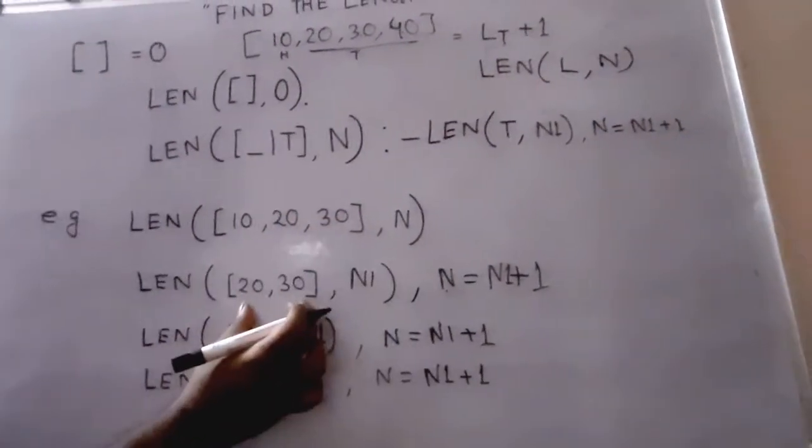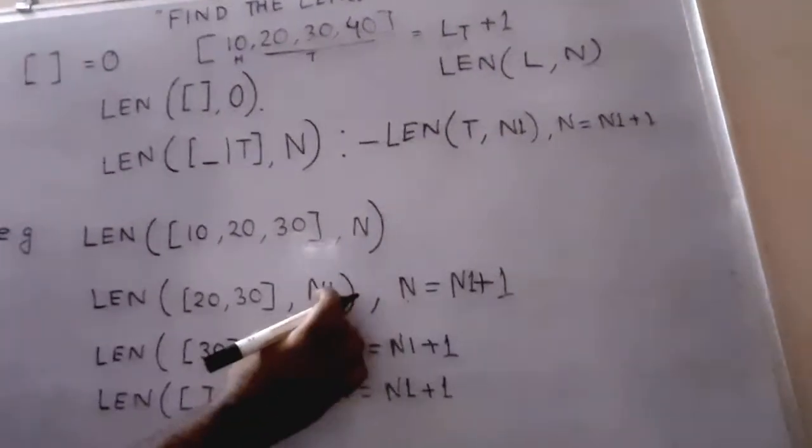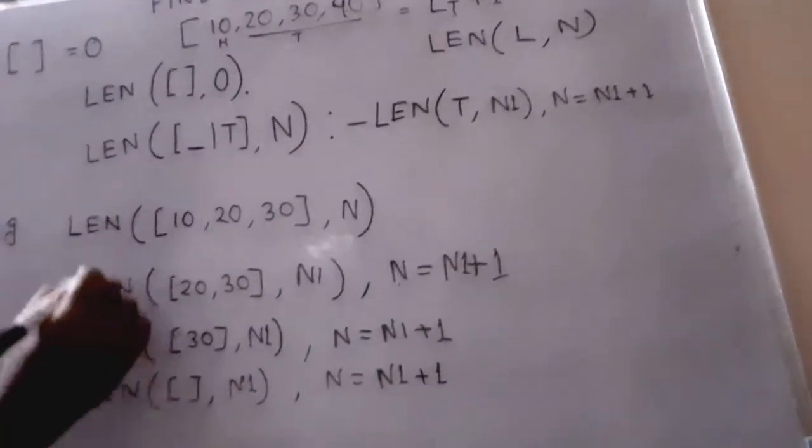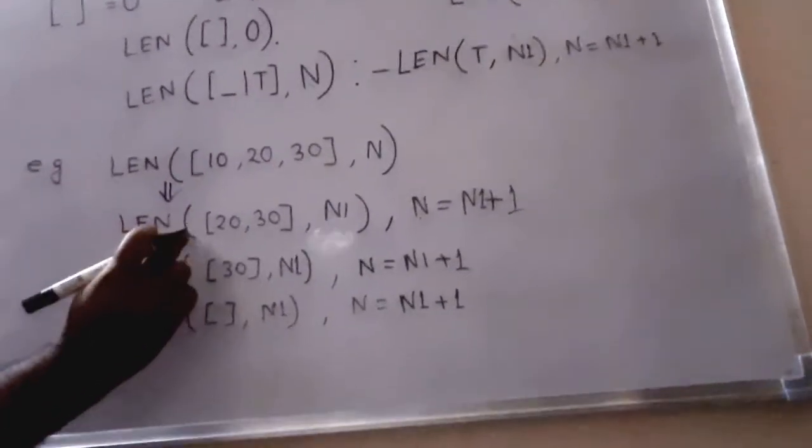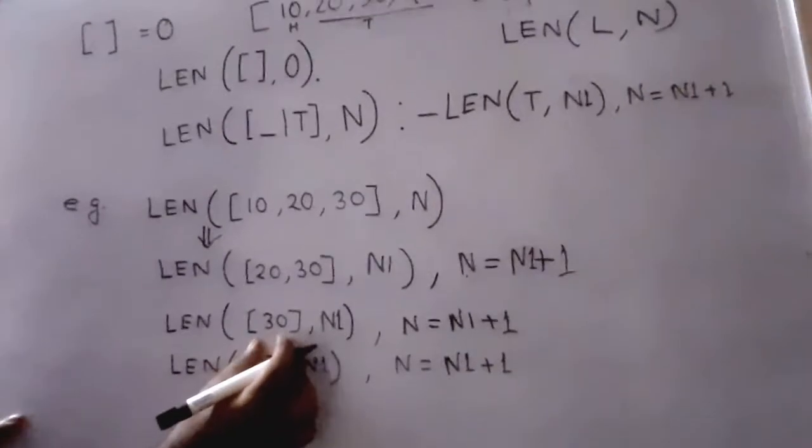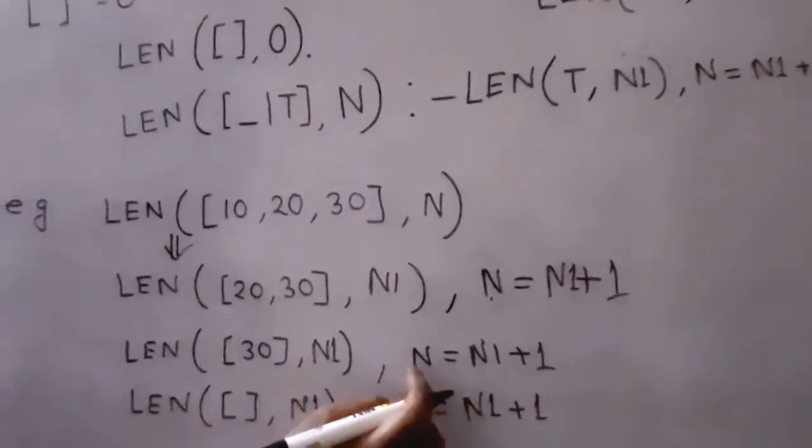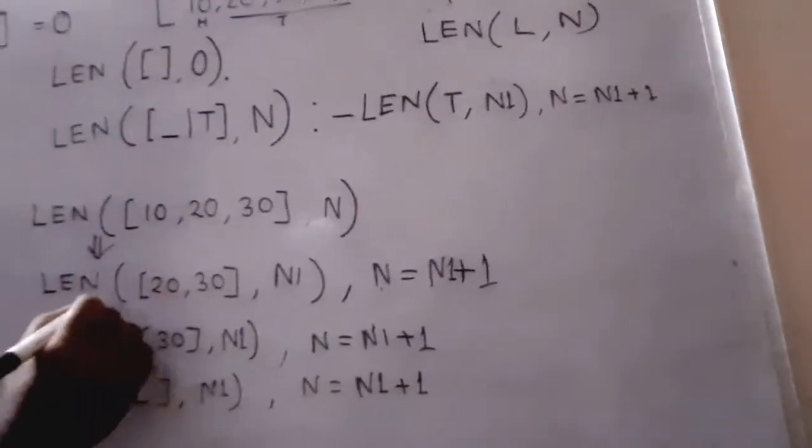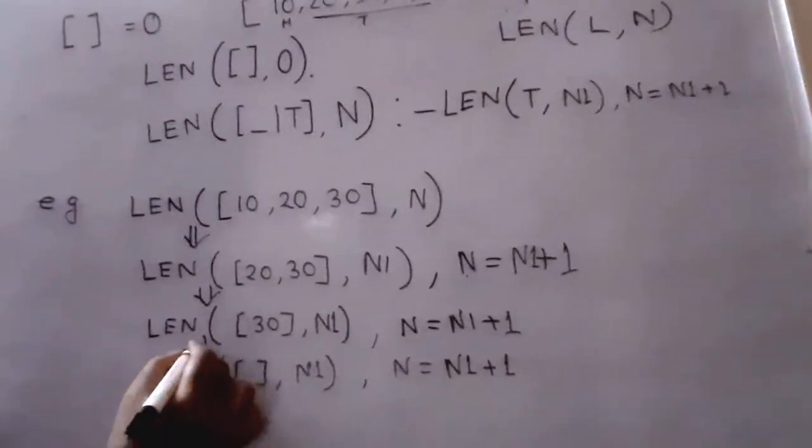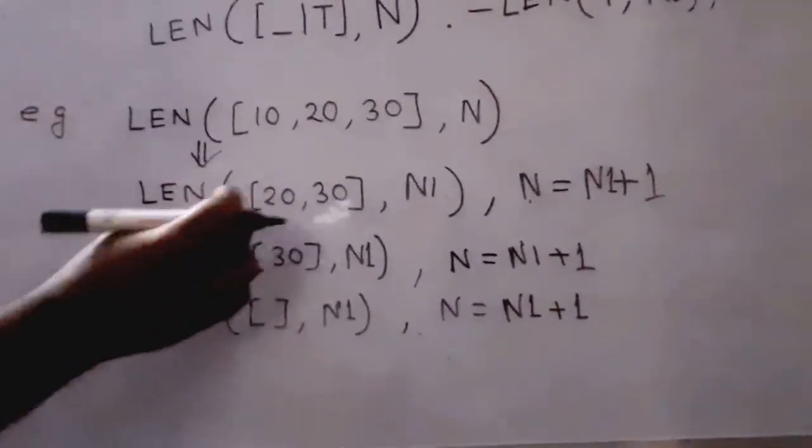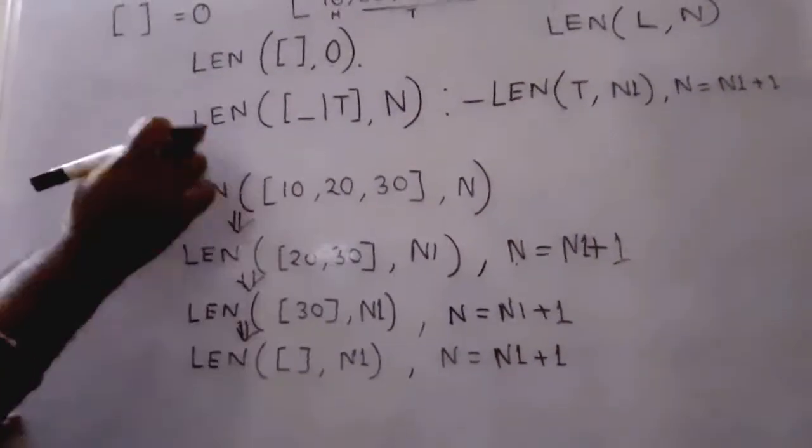The tail part is [20,30], with N = N1 + 1. Again it will recursively call the next clause. So now it will look for [30], N1, and N = N1 + 1. It will recursively call this. Up to that part, we're using clause two.